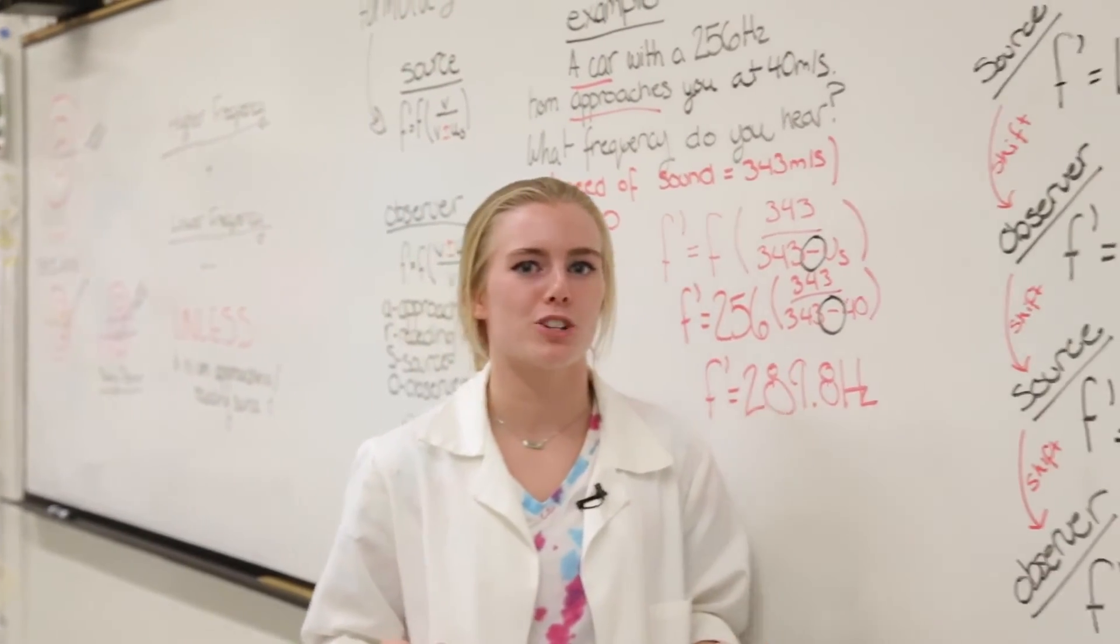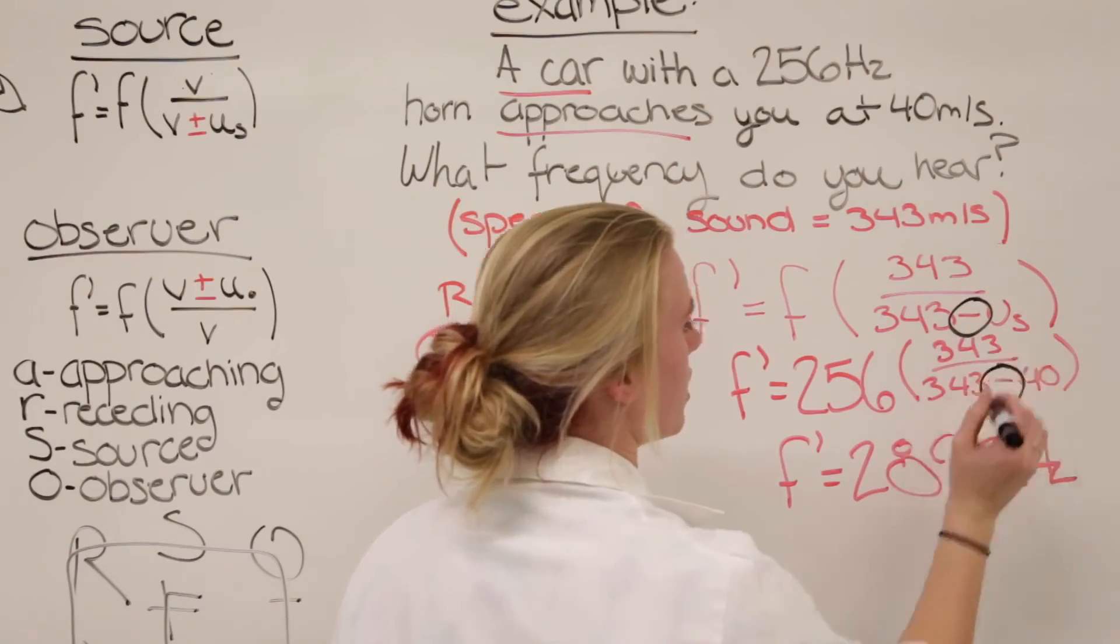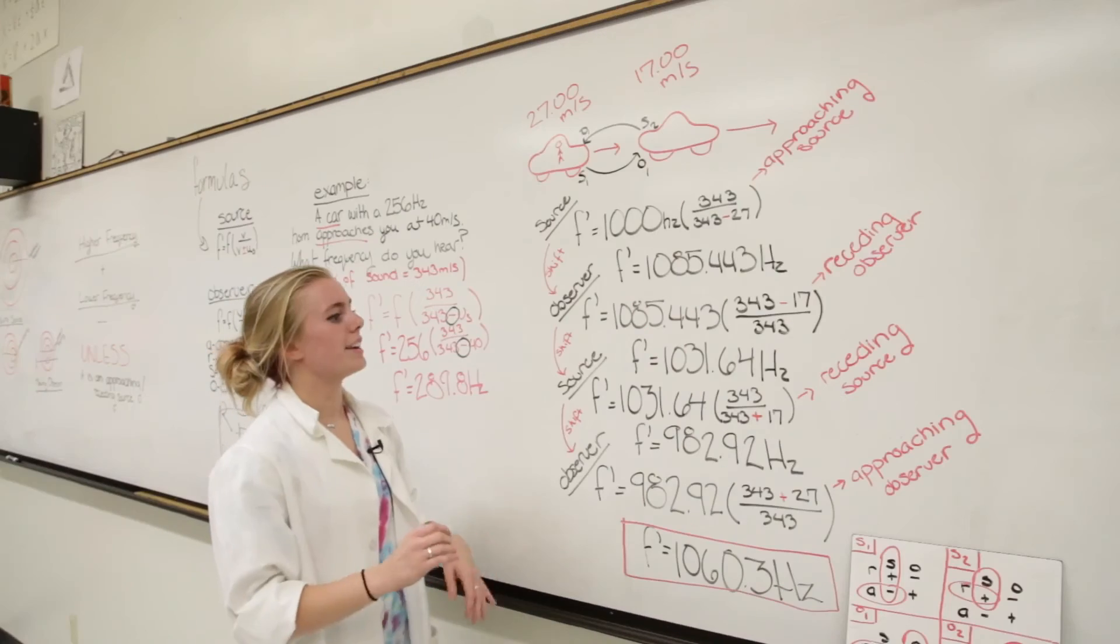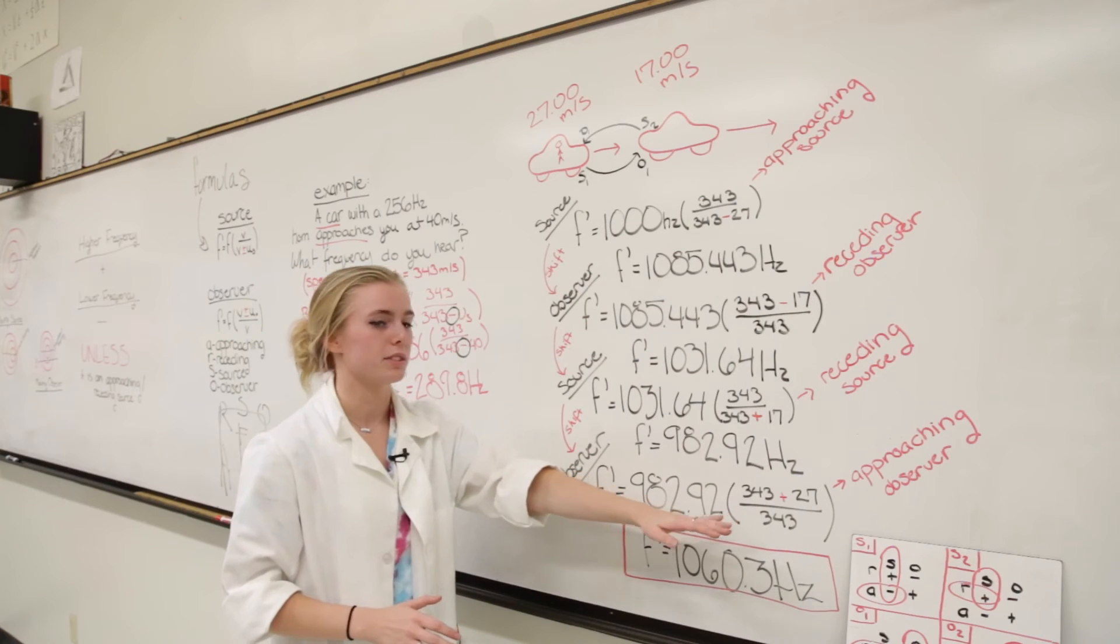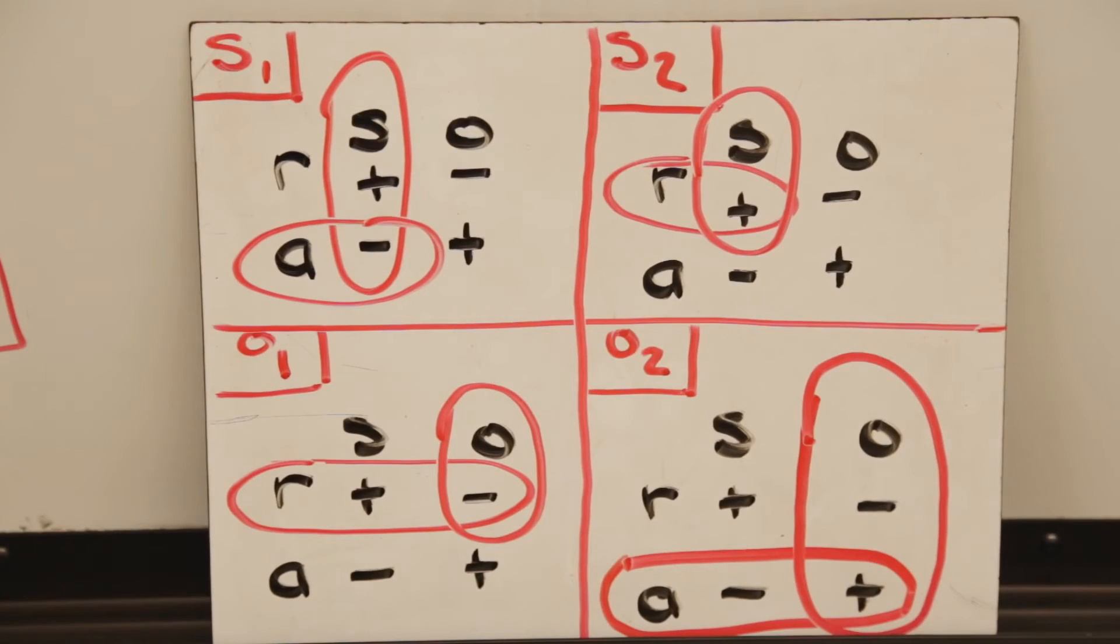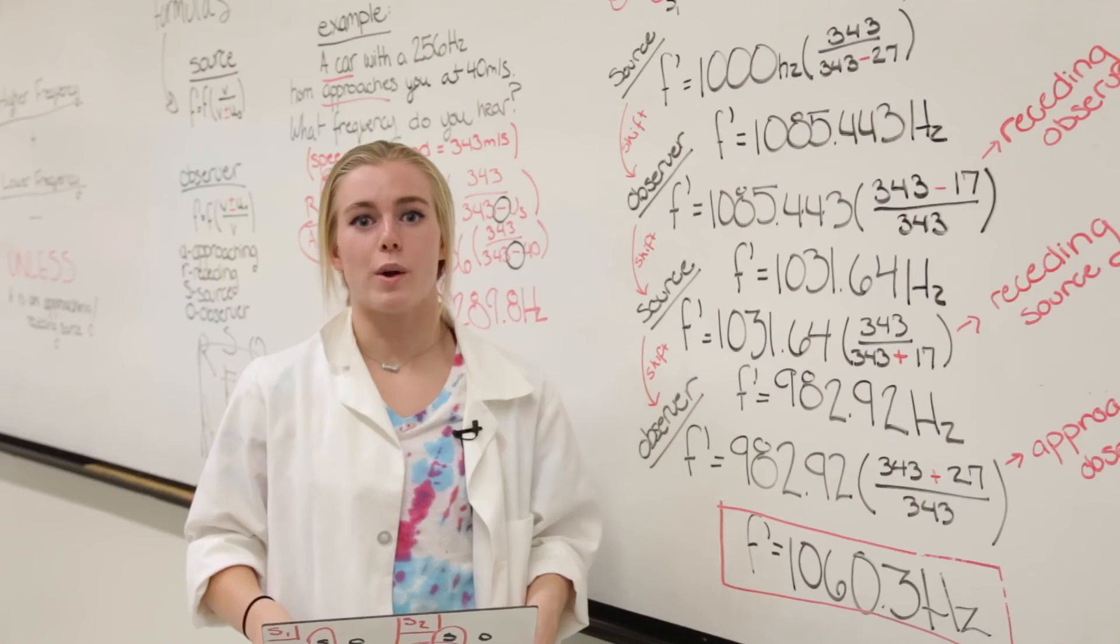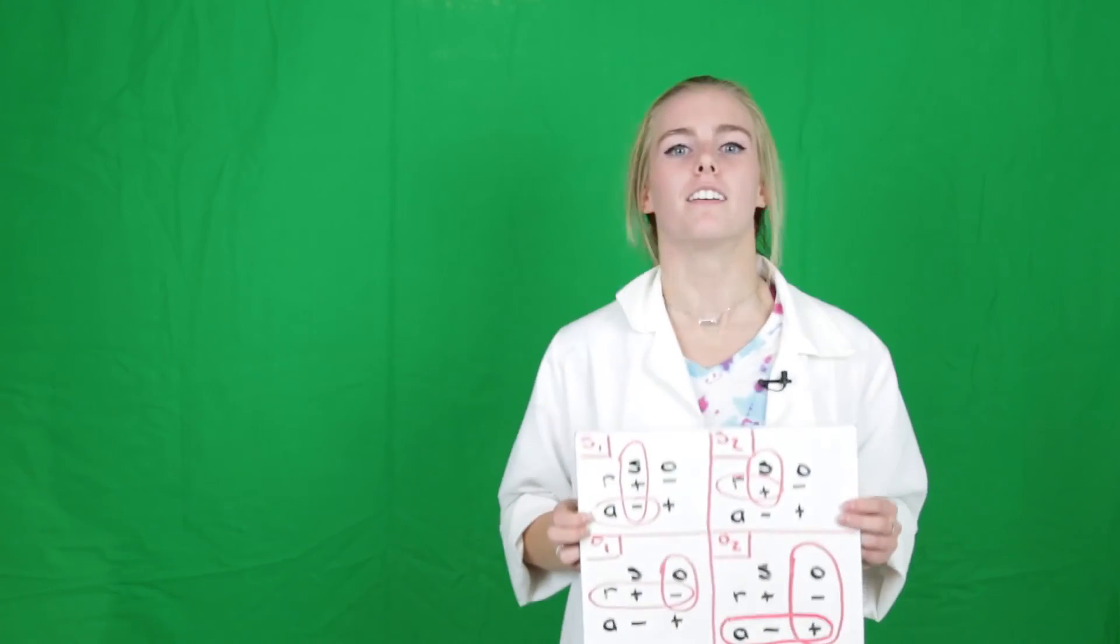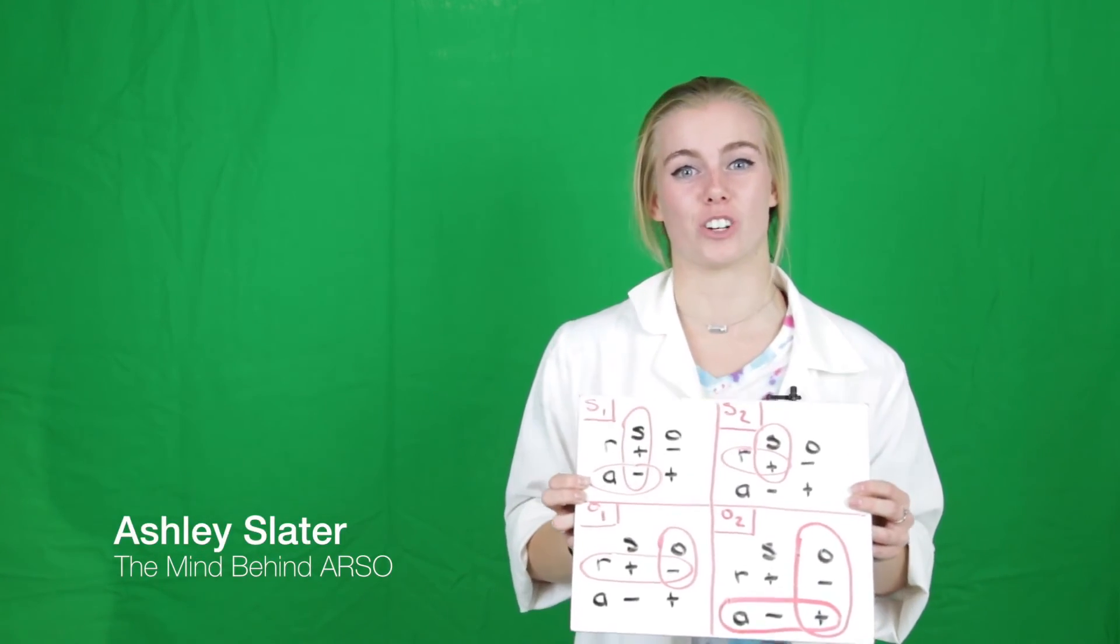The fantastic thing about ARSO is I always know I'm picking the right sign, even in a quadruple-step multi-shift problem. Ignore all of this work, only focus on the positive and negatives. I was able, by using ARSO, to quickly and efficiently solve this problem without having to worry if my notation was correct. So I can jump into any Doppler situation and always know the correct notation to use. I'm Ashley Slater, and this is your best friend, ARSO.